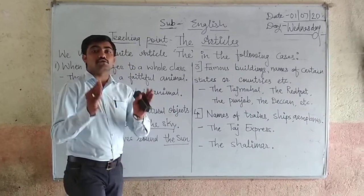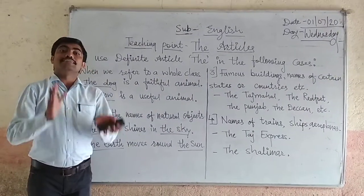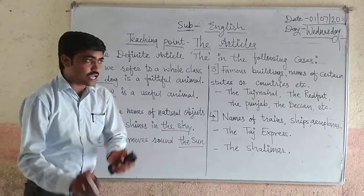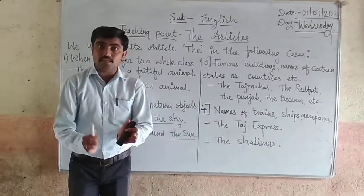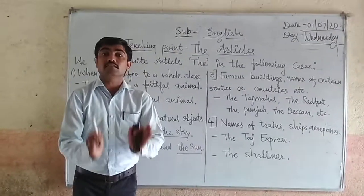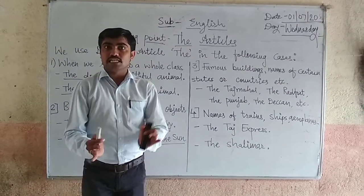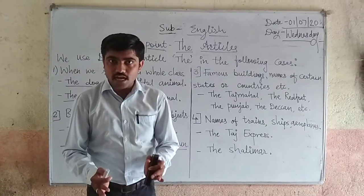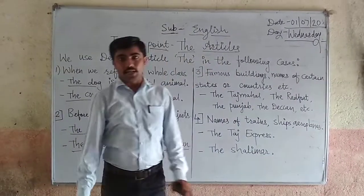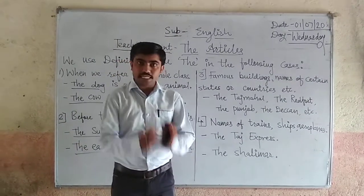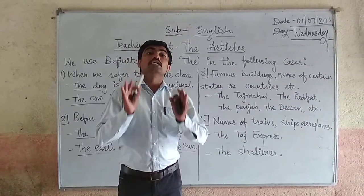To summarize, we use the article The in the following cases: First, when we refer to a whole class. Second, before the names of natural objects. Third, before names of certain states or countries, and famous buildings. Fourth, before the names of trains, ships, and aeroplanes — in all these cases, we have to use the article The.